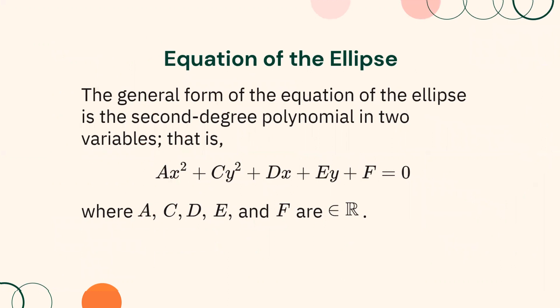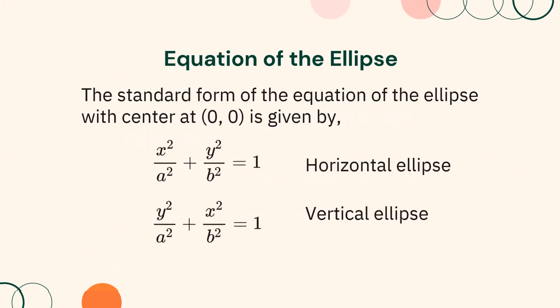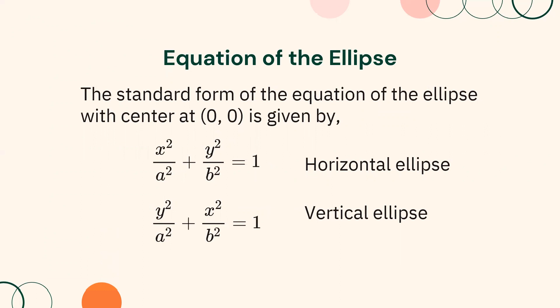We have discussed that the general form of the equation of an ellipse is a second-degree polynomial in two variables: ax squared plus cy squared plus dx plus ey plus f equals 0, where a, c, d, e, and f are elements of real numbers. The standard form of the equation of an ellipse with center at the origin is x squared over a squared plus y squared over b squared equals 1 for a horizontal ellipse, and y squared over a squared plus x squared over b squared equals 1 for a vertical ellipse.